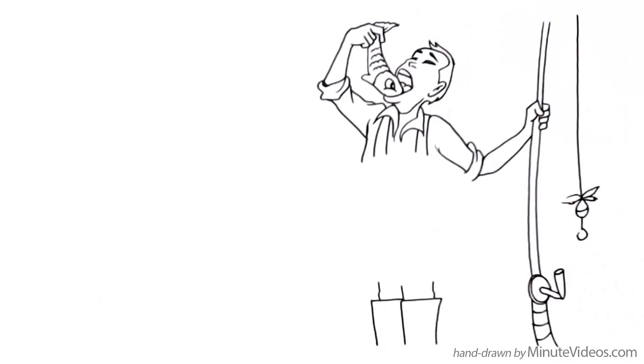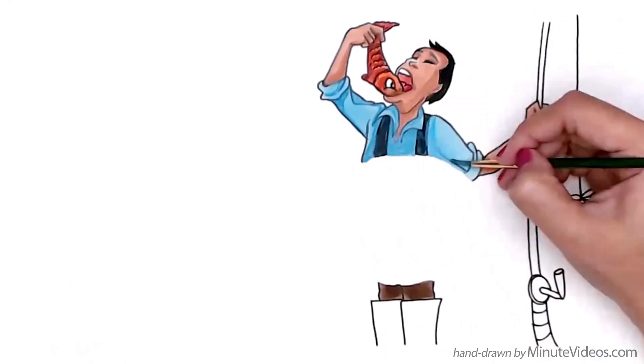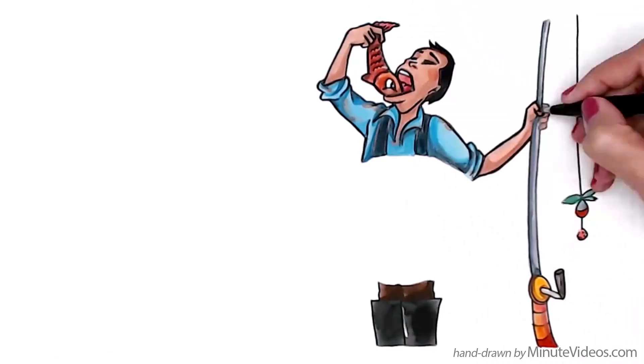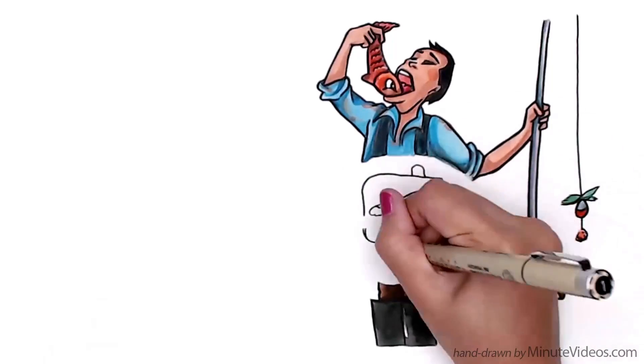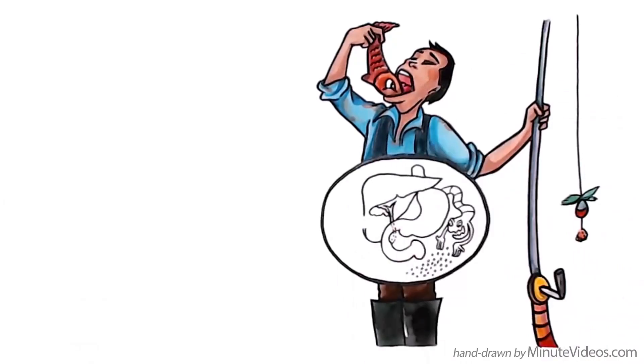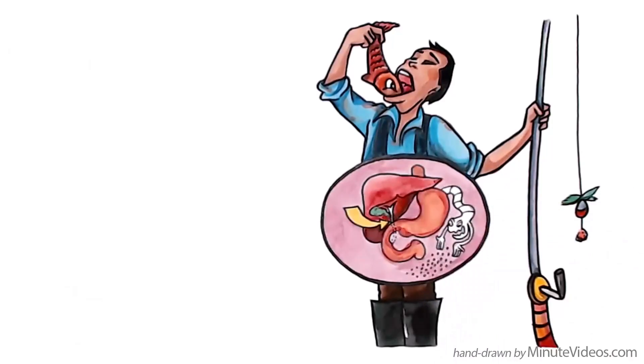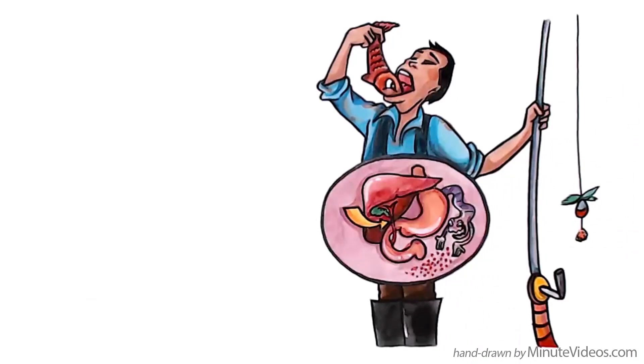The liver fluke is contracted by eating raw freshwater fish and salt-fermented fish. The parasite's larvae attach to the bile duct walls in the liver, where it takes about one month for them to grow into adult worms, which produce new eggs for at least eight years.